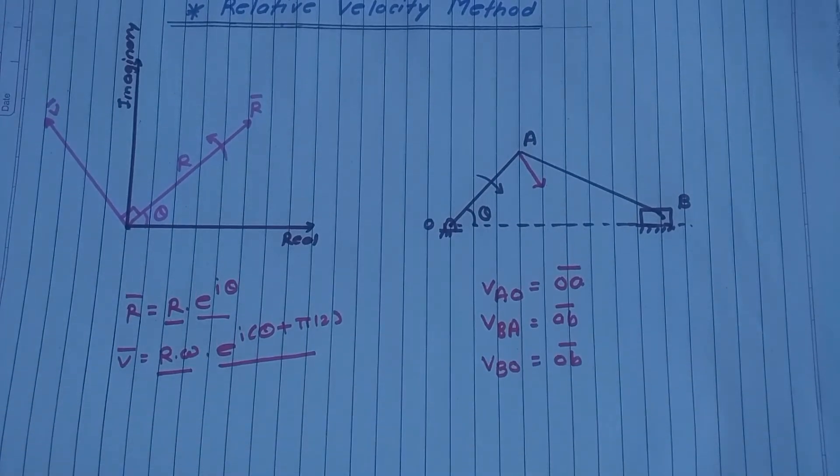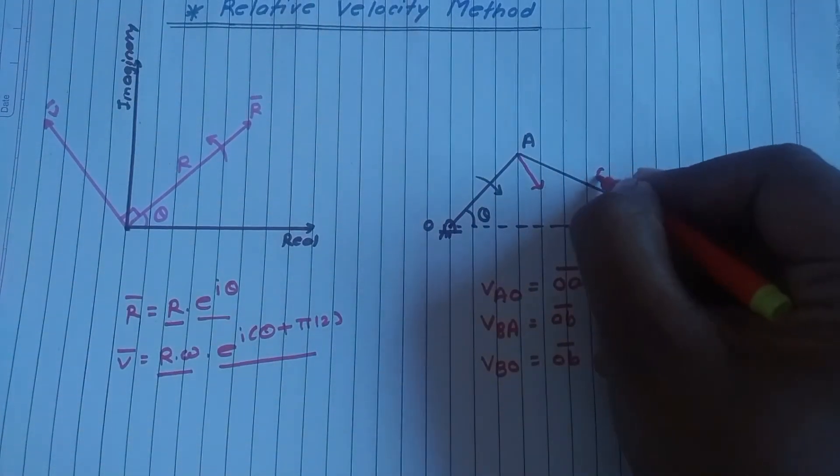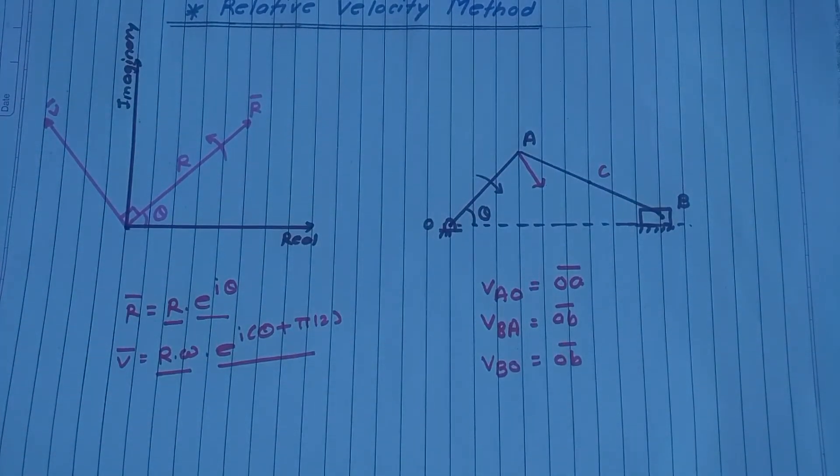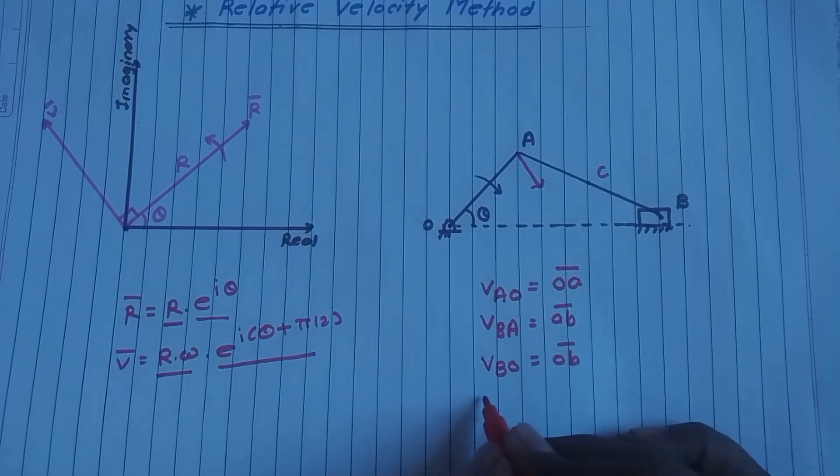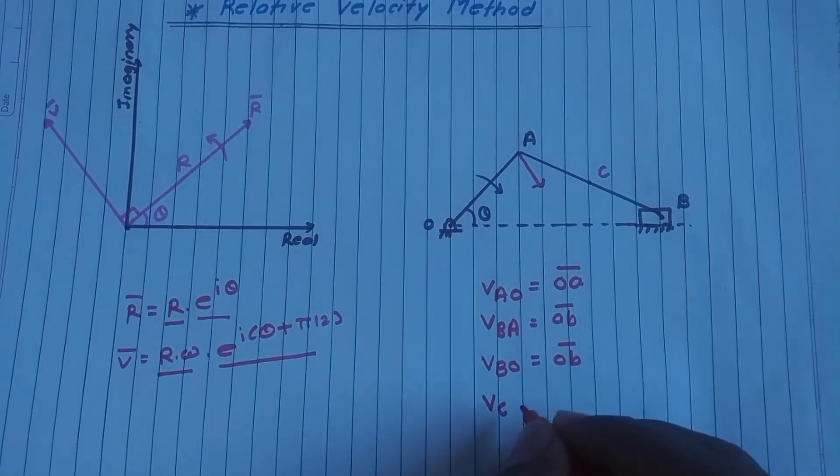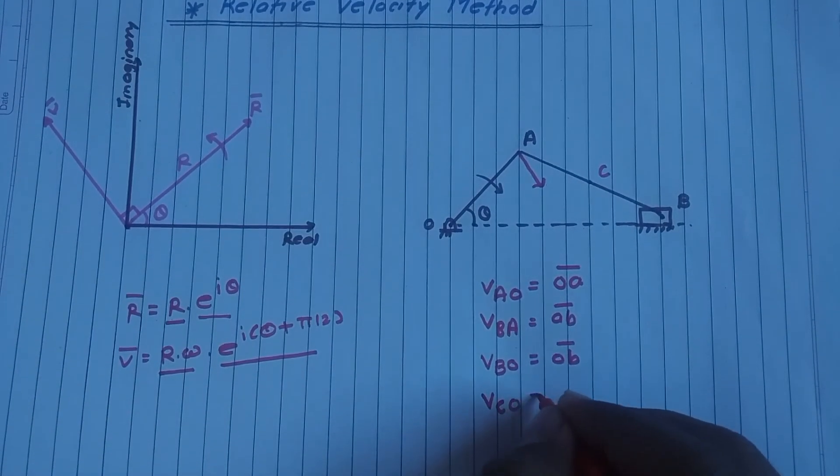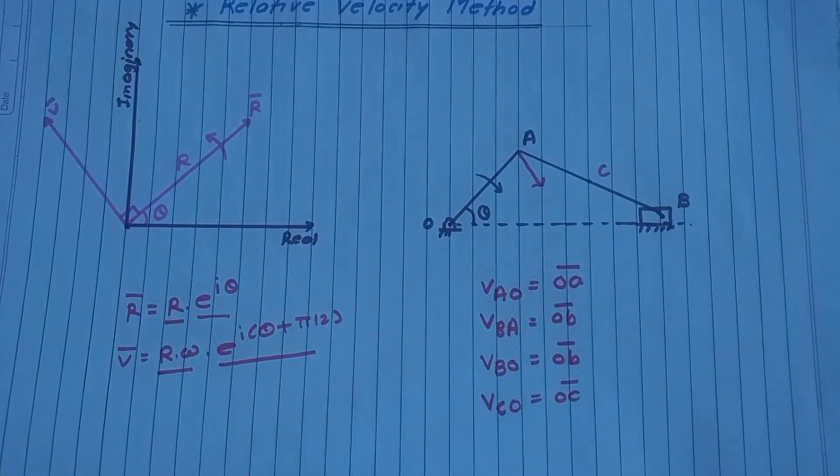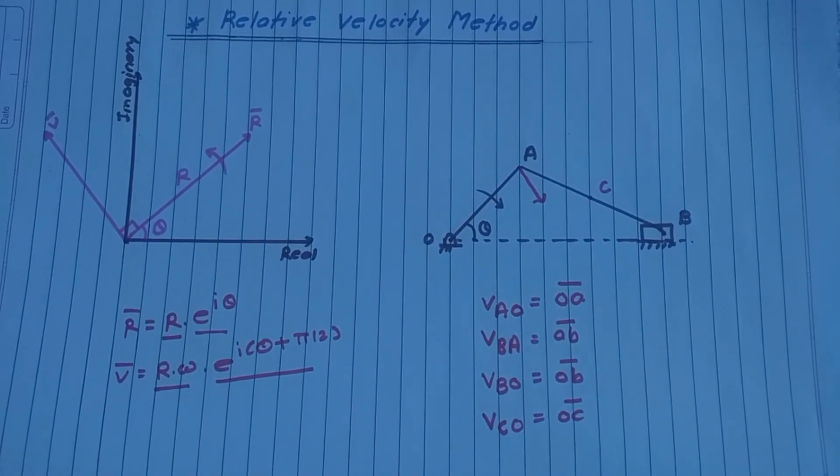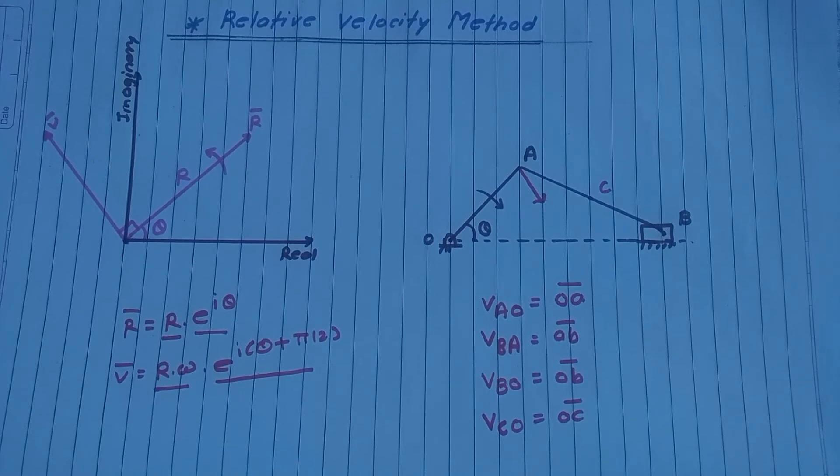Now consider any point on connecting rod. Let us consider C point. If we are interested in finding velocity of C, velocity of C always consider it with fixed point O, so it will be OC bar. This is how we find velocities at any point in given mechanism with help of this relative velocity method.